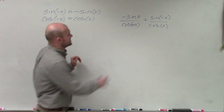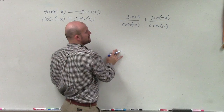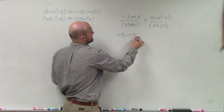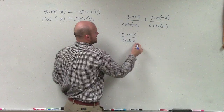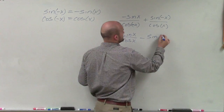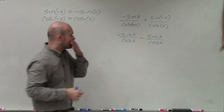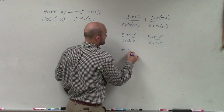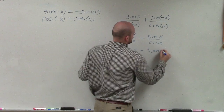What's nice about that is I know that the cosine of negative x is just going to be regular cosine, and the sine is now going to turn into a negative sine of x. So I have negative sine of x divided by cosine of x. Now, sine of x over cosine of x is tangent, so this becomes negative tangent of x.